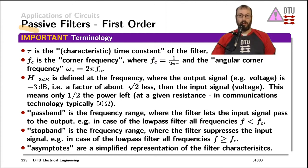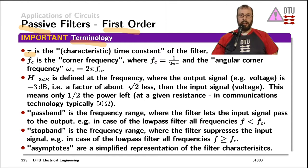Let's start out and have a look at passive filters first, and especially first-order passive filters. Before we dig into the circuits, let's have a look at the terminology used with first-order filters. The Greek letter tau is often used as the characteristic time constant of a filter, and the corner frequency fc relates to tau by this equation: the corner frequency is one over two pi times the characteristic time constant.